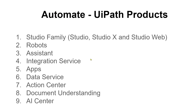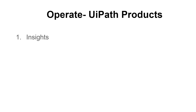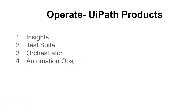The last product under Automate is AI Center. The next category is Operate. In Operate, the products are: UiPath Insights, Test Suite, Orchestrator, Automation Ops, Automation Cloud, Automation Suite, and Unified Admin.